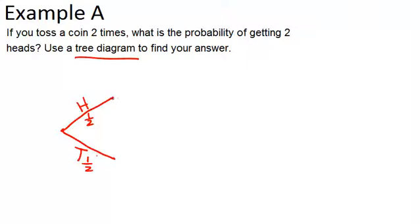So we're going to add another set of branches off of each of these endpoints. So say we got heads originally, then the second time we could get either heads or tails again with the probabilities being one half again in each case.